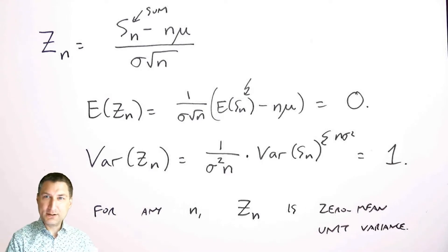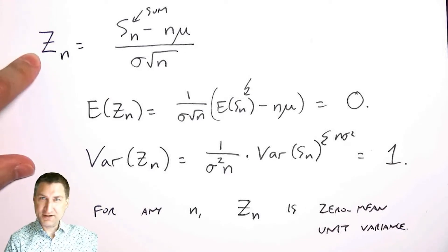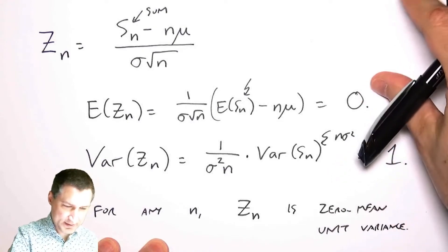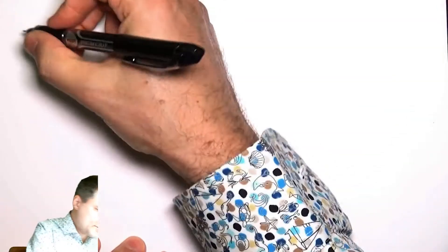The super cool thing the Central Limit Theorem tells us is that in the limit, this thing is Gaussian. What do I mean by that?